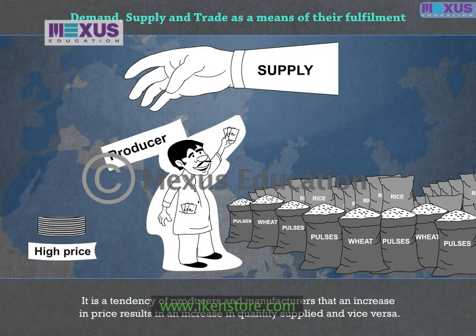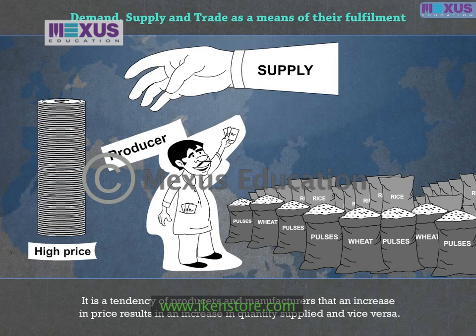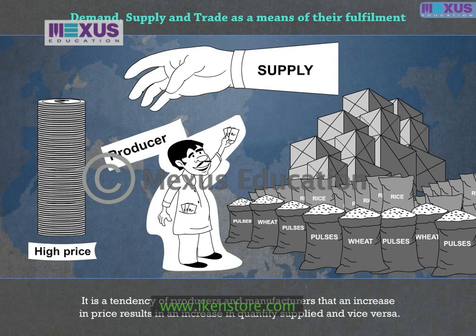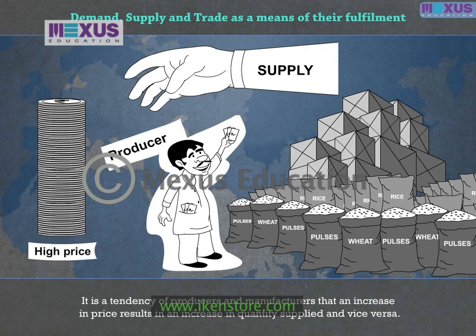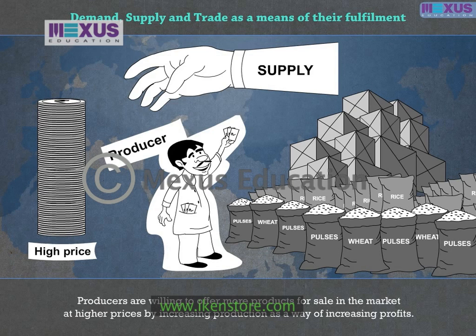Here, selling is the main aim for supplying that commodity or service. It is a tendency of producers and manufacturers that an increase in price results in an increase in quantity supplied, and vice versa. This means that producers are willing to offer more products for sale at higher prices by increasing production as a way of increasing profits.